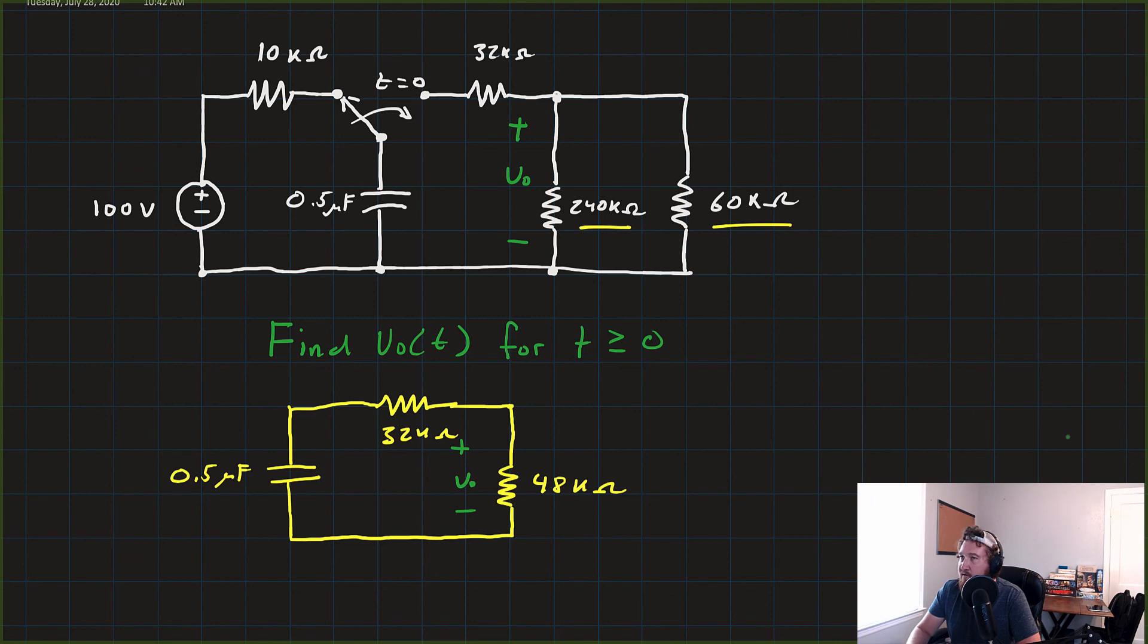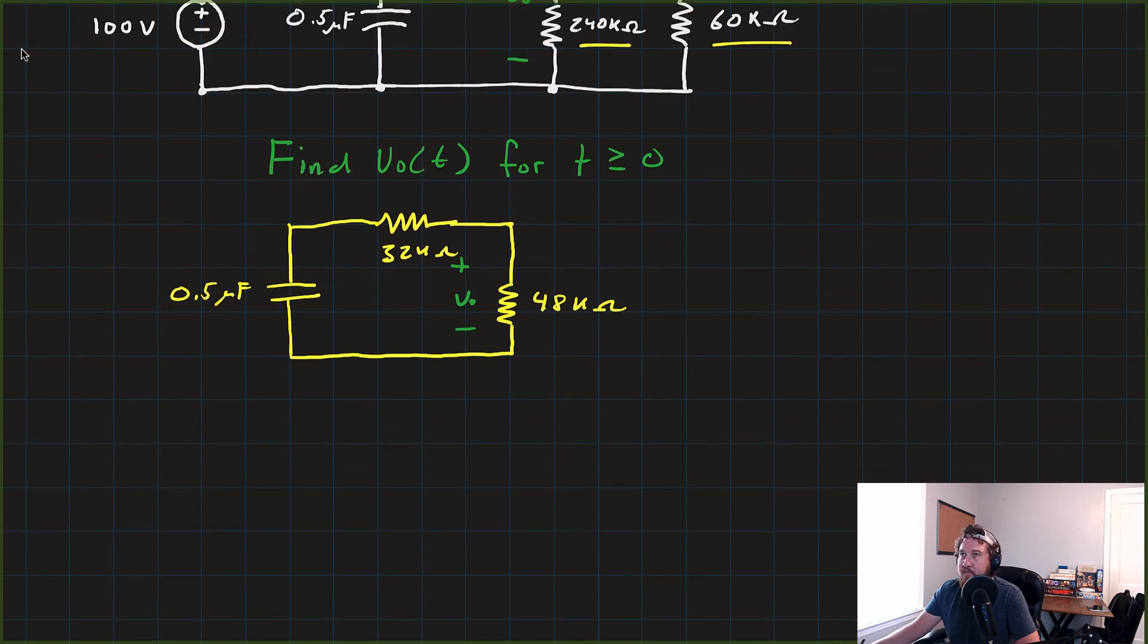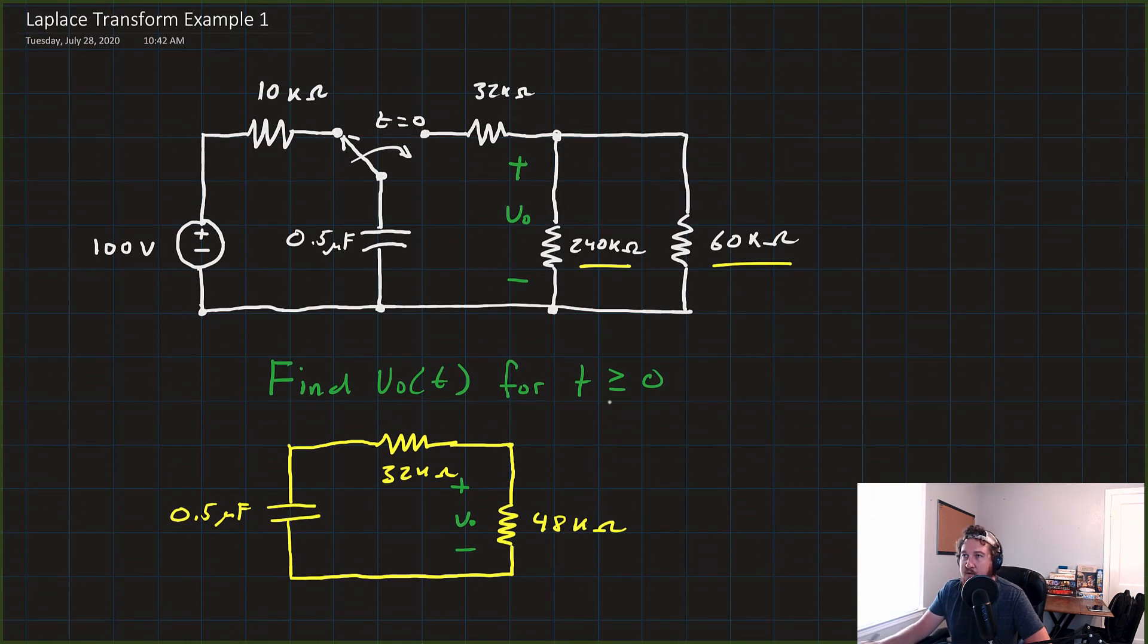So now let's go through our steps of the Laplace transform method. Step one was find any initial voltages and currents on our inductors or capacitors. But here we have a capacitor, and that capacitor was initially attached to this 100-volt DC source. Remember, at DC, a capacitor is an open circuit. So effectively, there was just an open circuit at the end at the terminals of this source.